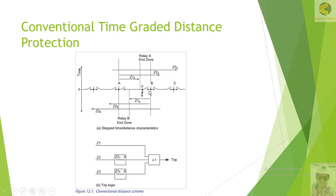However, for cases where, for example, breakers fail at station A and this cannot be checked at station A, or if there is high voltage at station B due to ferranti effect or similar effects that cannot be checked at station A — in such cases where it is inherently not possible to apply a condition or pre-check at the remote end, the direct transfer trip scheme is used.